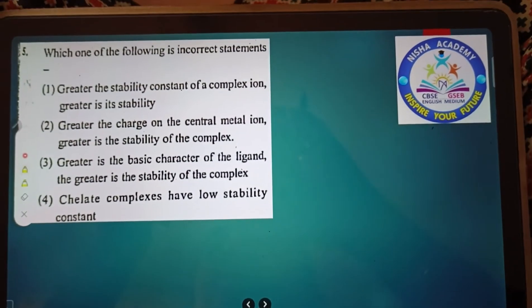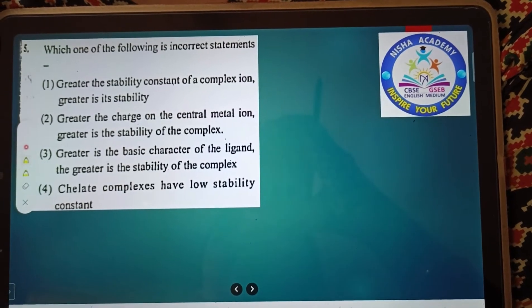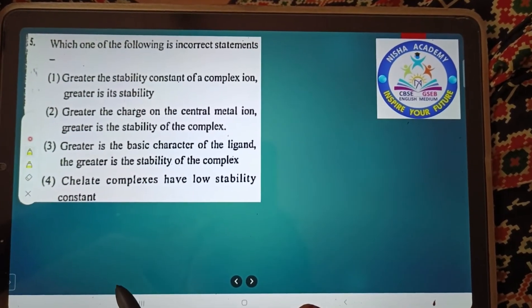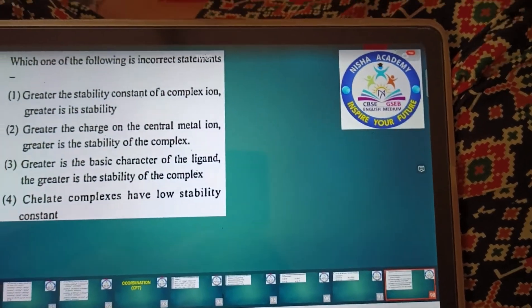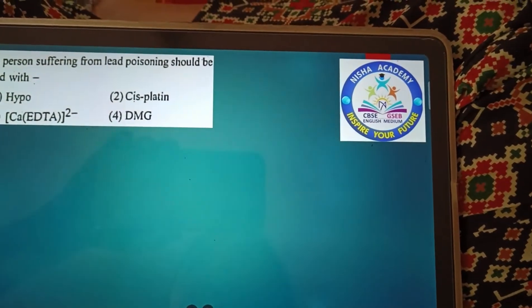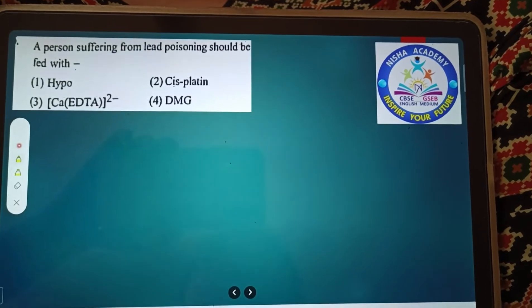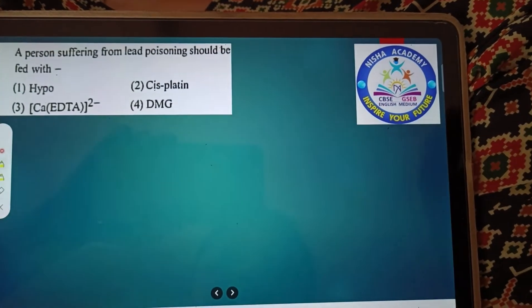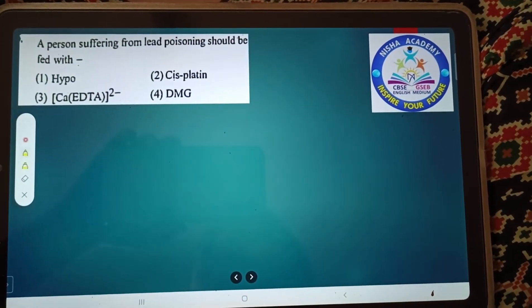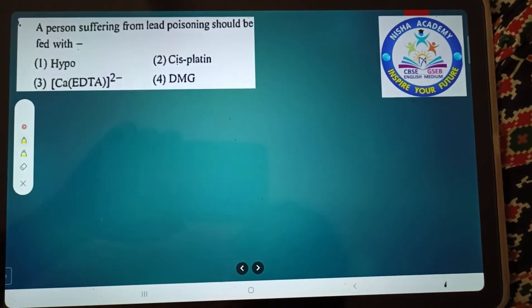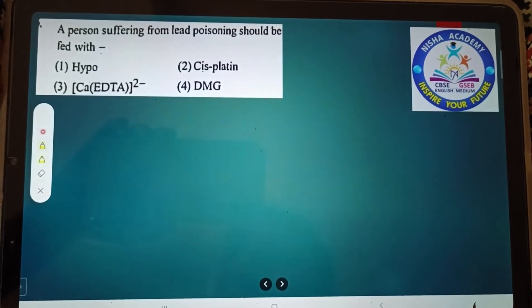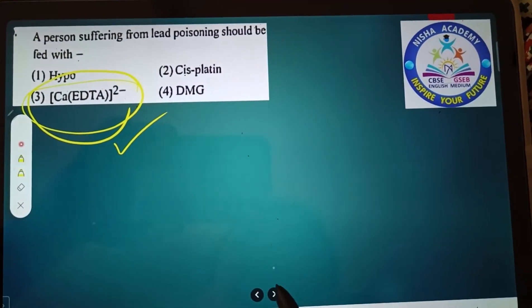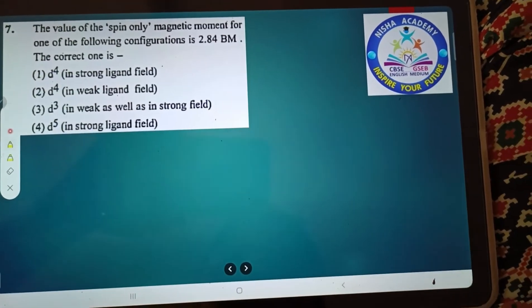This is a theory-based question. Just read and give me the correct answer. A person suffering from lead poisoning should be fed with EDTA. This is from the application part - uses of complex compounds. EDTA forms a complex. That's the answer.